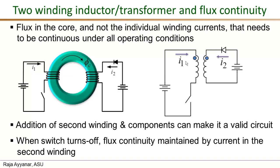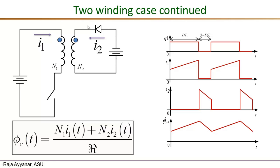We have to make sure that when the current i1 is interrupted by this switch, then on the secondary side i2 has the correct current direction as well as the magnitude to ensure that the net flux in the core is continuous. In the next slide we will look at the actual waveforms of the two currents i1 and i2 to confirm that the flux remains continuous. Recall that when currents enter the dot in different windings, the flux due to these currents adds in the magnetic core — the flux produced by these two currents are in the same direction in the ferrite core.